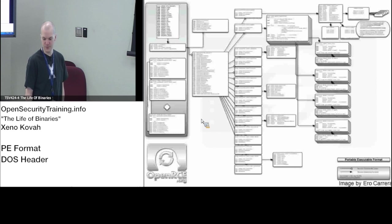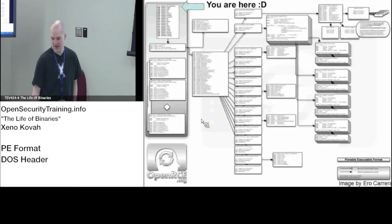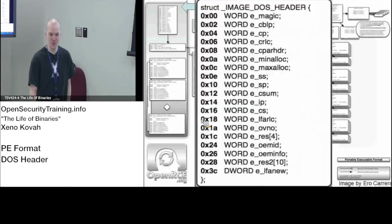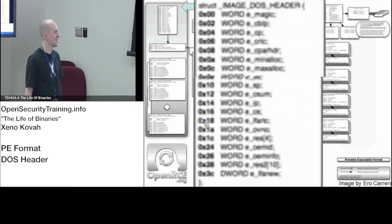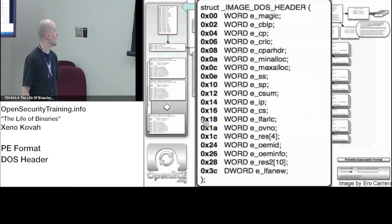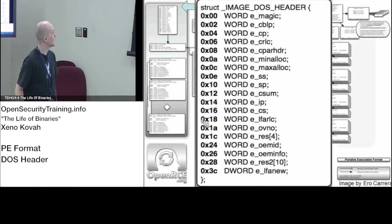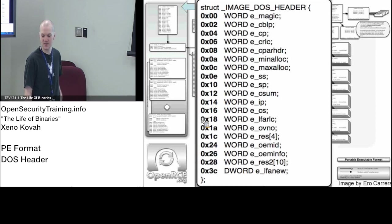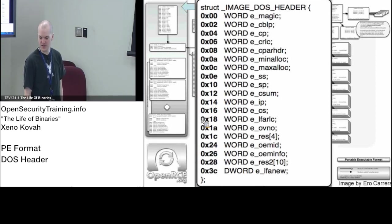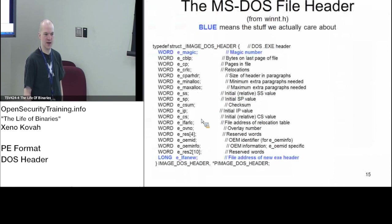Now we zoom in on the DOS header. This is the very first structure, at offset zero into the file, and it turns out there are only two things that we actually care about in this structure.